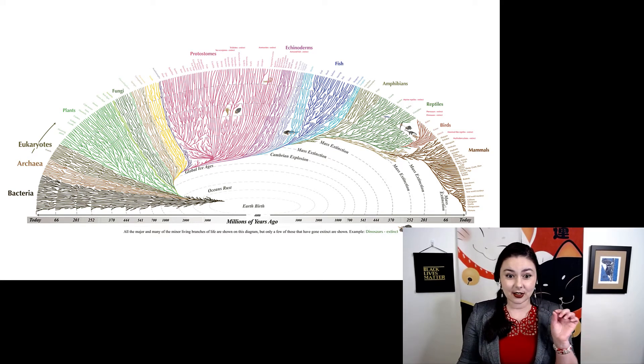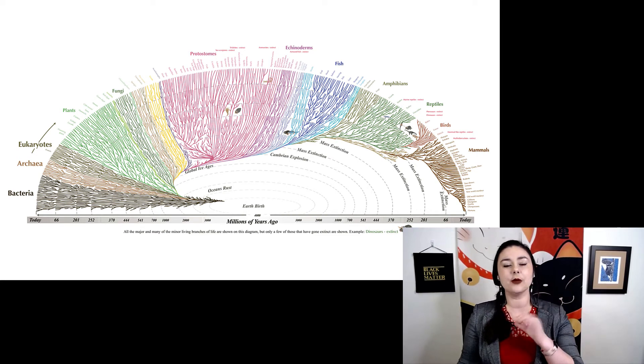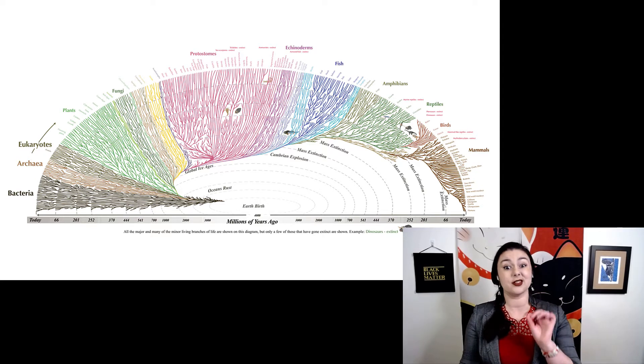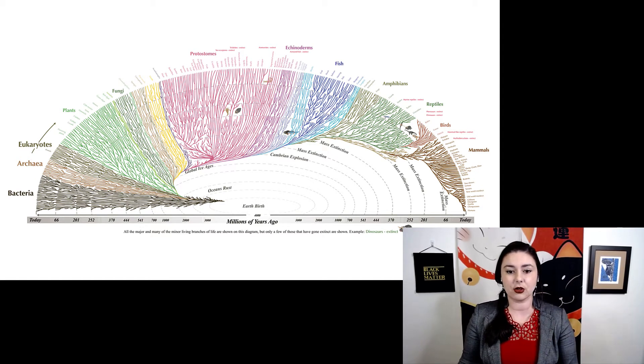And you can see what's kind of fun here is that there's these little dotted lines to help you figure out the age. And they've denoted a couple of important times in the geological record, like the Cambrian explosion. You can see there's a lot of species that originate or lineages that originate then. And they also note a couple of different mass extinctions.